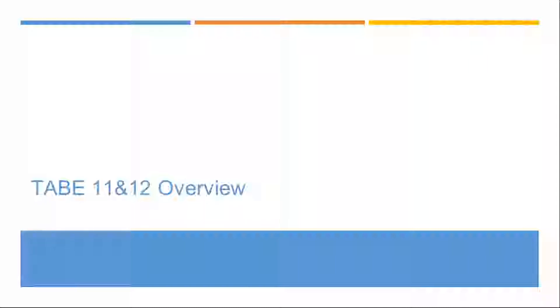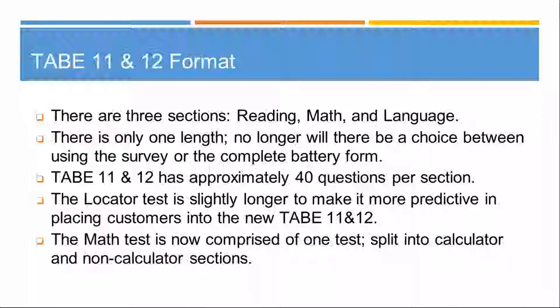Let's begin with an overview of the TABE 11 and 12, including changes from the previous test. The TABE 11 and 12 now includes three content areas: reading, math, and language. There's only one length of test — no longer will there be a choice between using the survey or the complete battery form. Many people used the survey because it was shorter, but that won't be an option with 11 and 12.